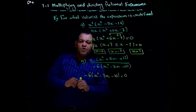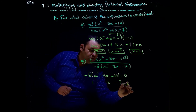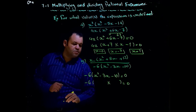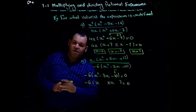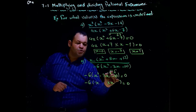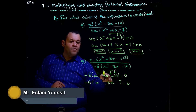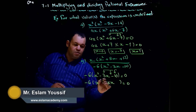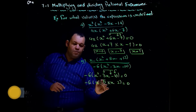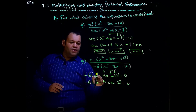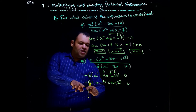We set the denominator, negative six times (x² − 3x − 10), equal to zero. Factorizing the trinomial, we open two brackets and find two numbers that multiply to 10 and subtract to 3 — those are 5 and 2. The sign of the middle term follows the greatest number, so negative times negative equals positive.